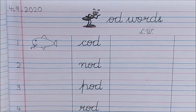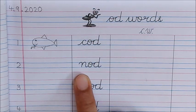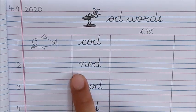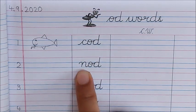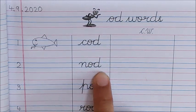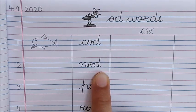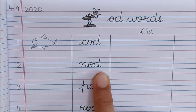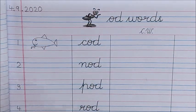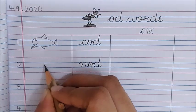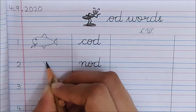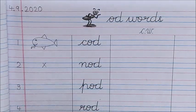Now children, let us read the next word. N, O, D, Nod. N, O, D, Nod. Nod means to move your head up and down. Children, nod your head. Nod. Nod. Nod is an action. For nod, we will not draw a picture. So, put a cross here.